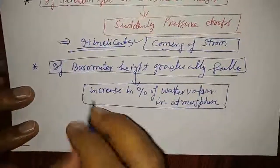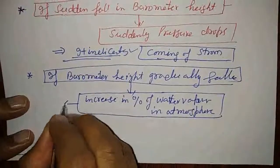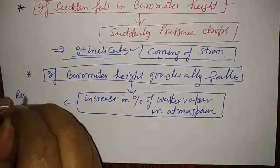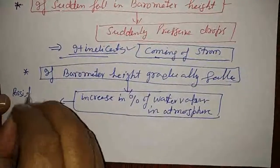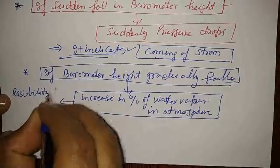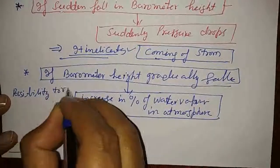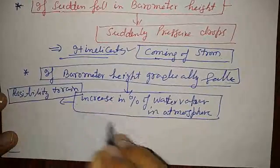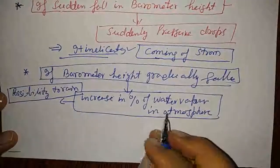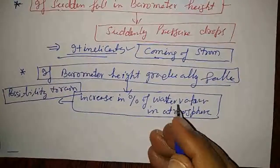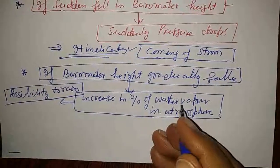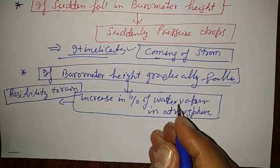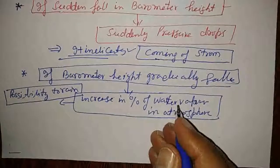What does this indicate? It gives a possibility of rain — rain may come. If water vapor becomes more than a certain limit, water particles combine and form droplets, rain droplets, and due to gravity they fall as rain.